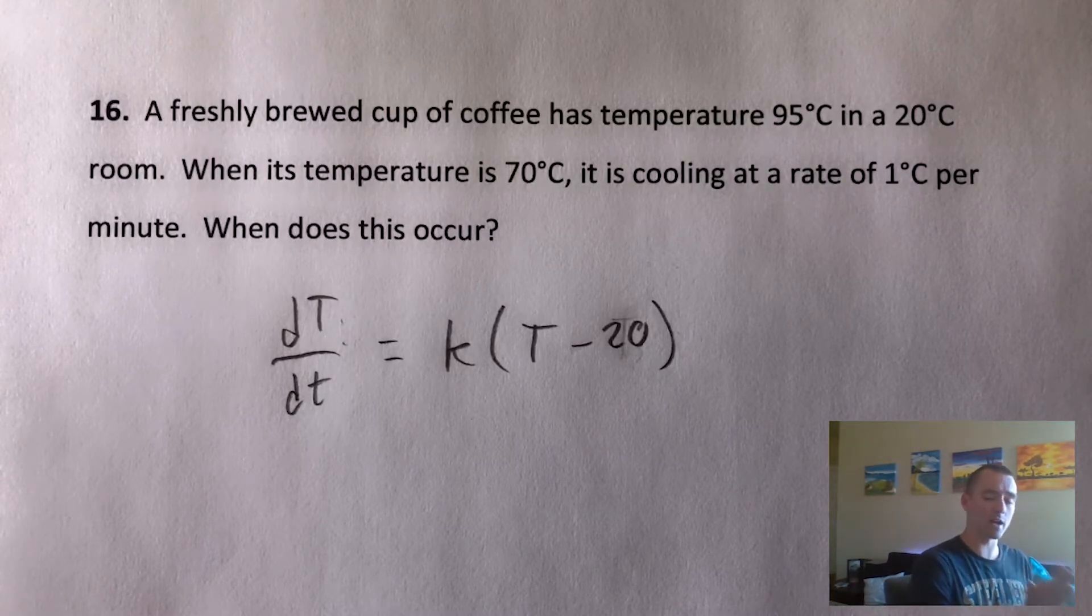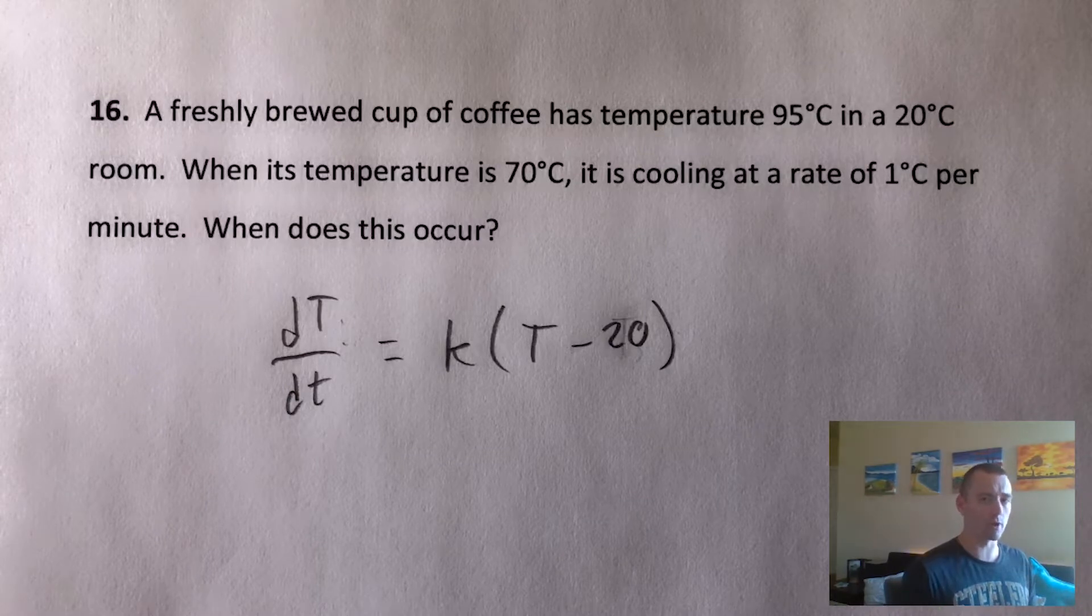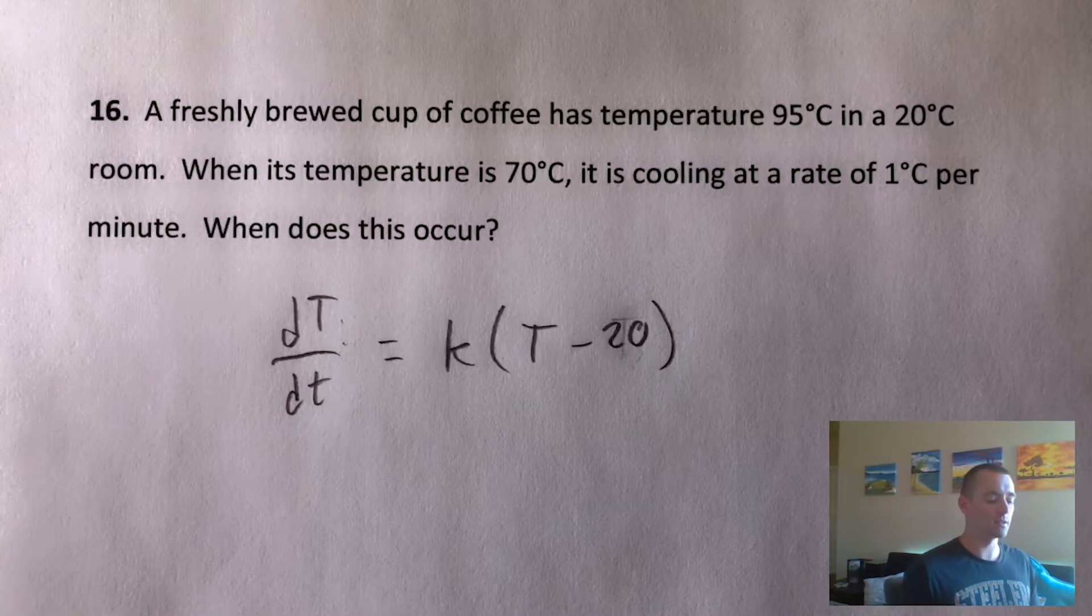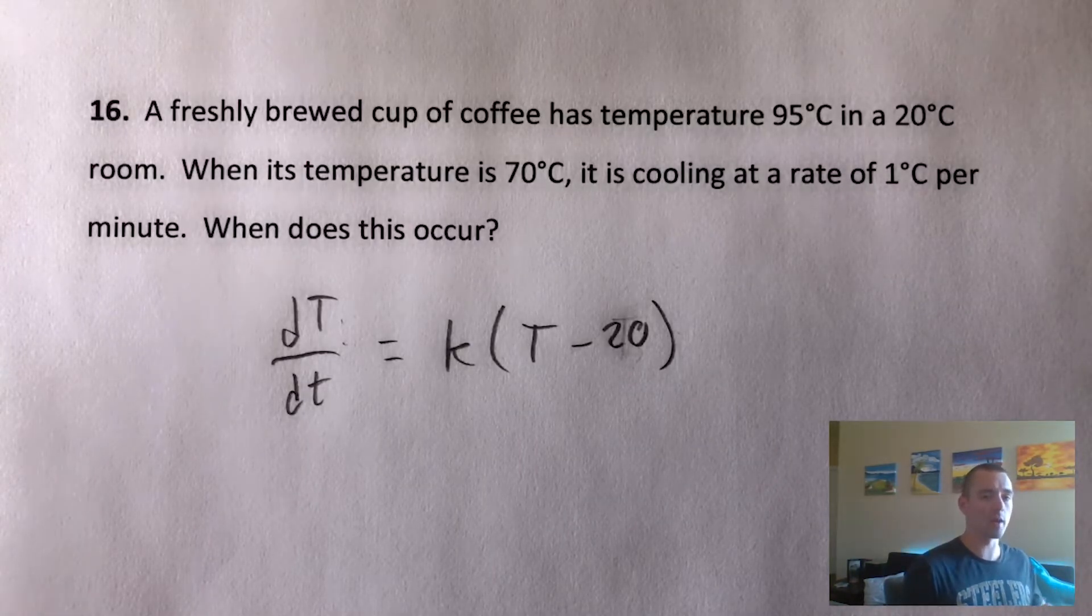The reason I say this problem is different than what you usually run into is it doesn't tell us the temperature of the coffee at some later time. It tells us the temperature is 95 degrees when it's first brewed, when T is zero.